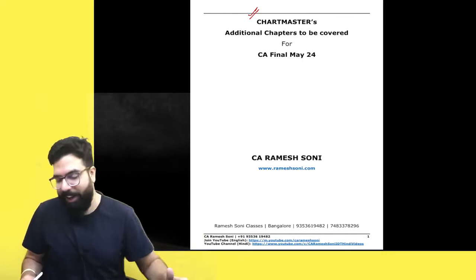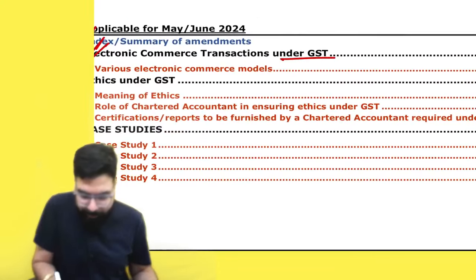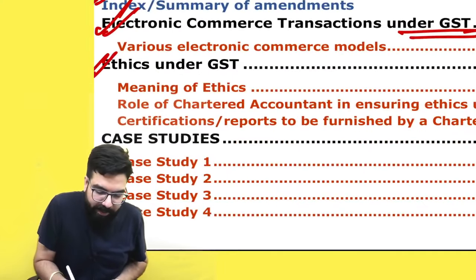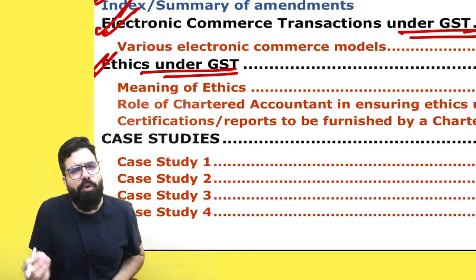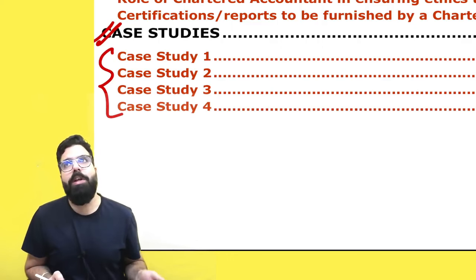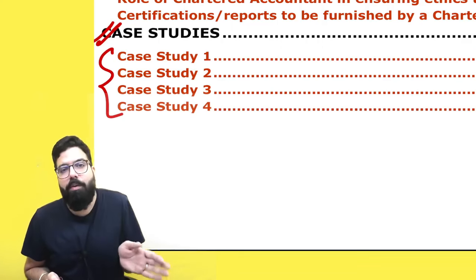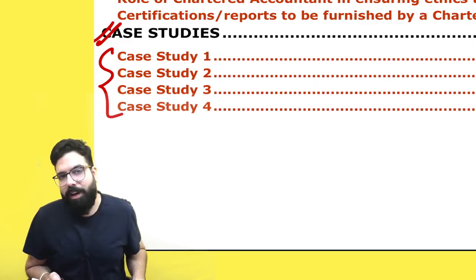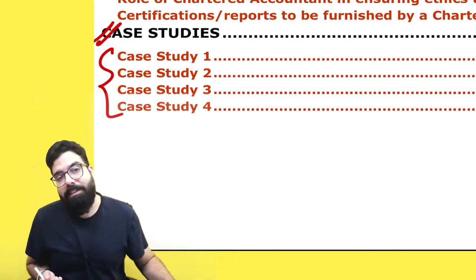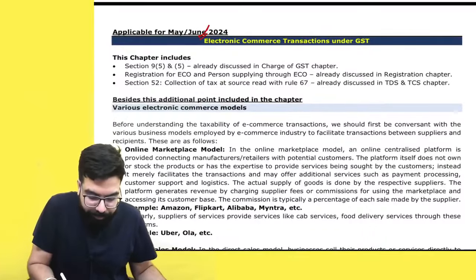The ICAI has told that one chapter is e-commerce under GST — e-commerce transactions under GST — which is already covered by us during class. Next is ethics under GST, a very small chapter of four to five pages. Additionally, the ICAI has given four case studies which a student has to cover. The new book for May 2024 released by ICAI has offenses, penalties, ethics under GST, and case studies all provided in that chapter.